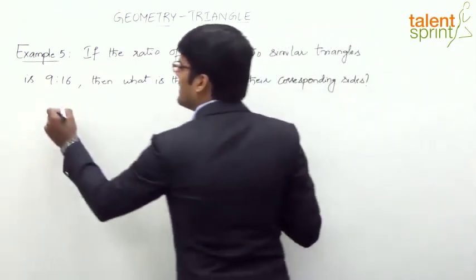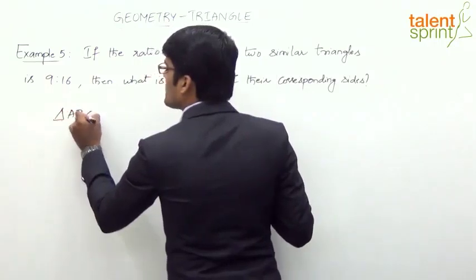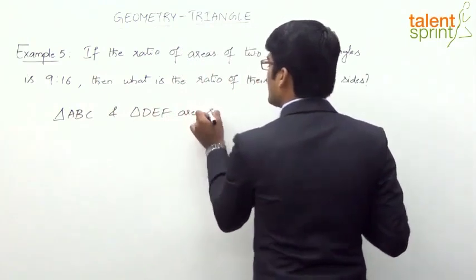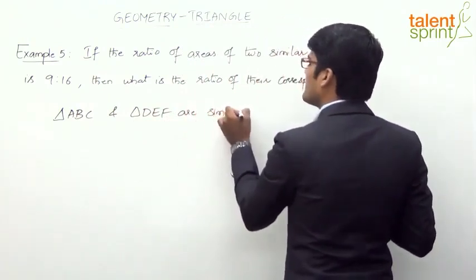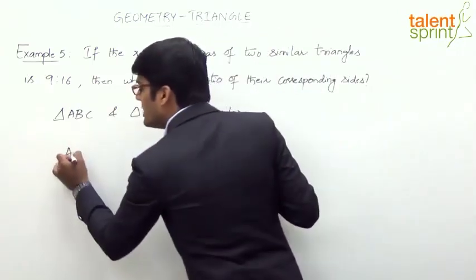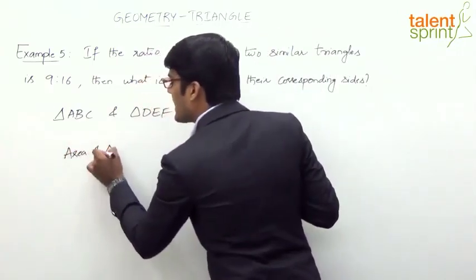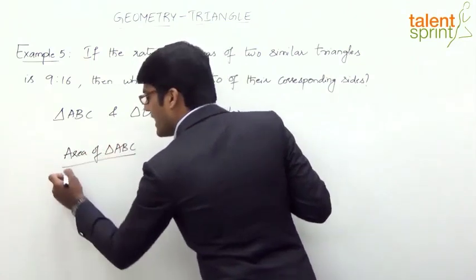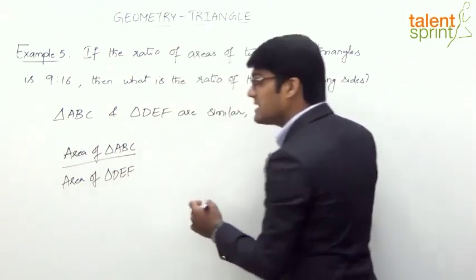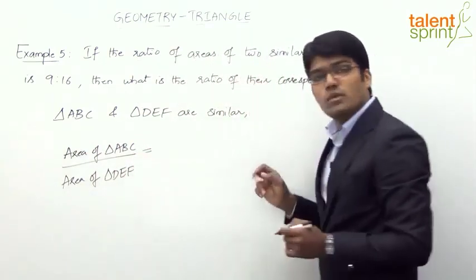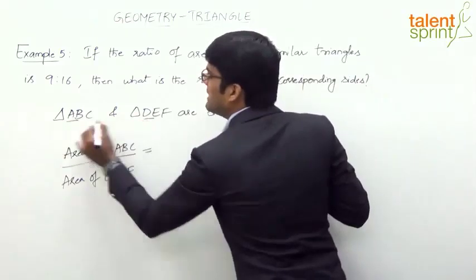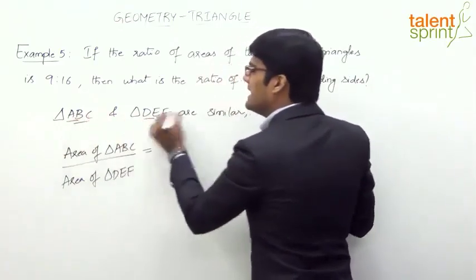For example, if triangle ABC and triangle DEF are similar, then the ratio of the area of triangle ABC to the area of triangle DEF will be equal to the ratio of the squares of their corresponding sides. The corresponding sides are AB and DE, BC and EF, and AC and DF.